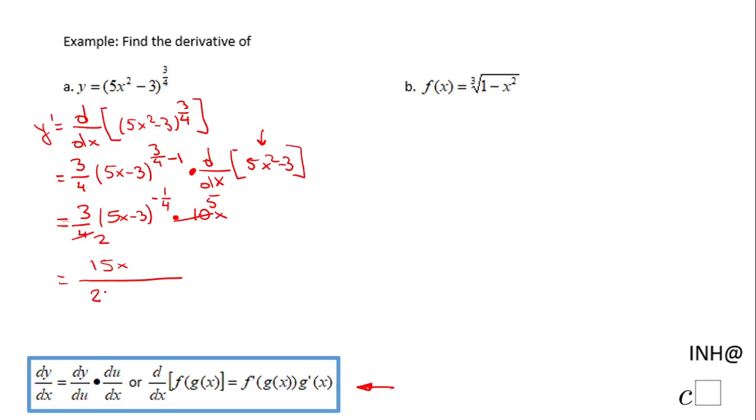And then be careful, we have a 2 here, and then we can change this negative exponent to a positive exponent and we have (5x² - 3) to the power of 1/4. This is y prime. This is a good form.